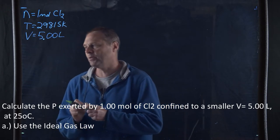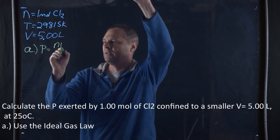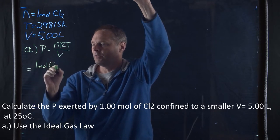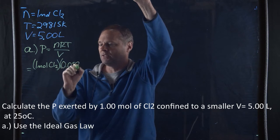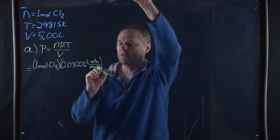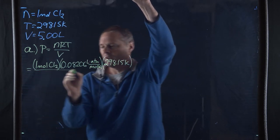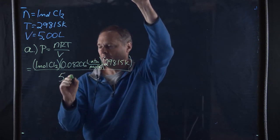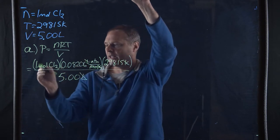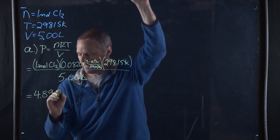For part A, we're going to use the ideal gas law to find the pressure. Pressure is equal to nRT all over V, which is equal to one mole times R (0.08206 liter·atmosphere/mol·K) times 298.15 Kelvin divided by 5.00 liters. The liters, Kelvins, and moles all cancel, leaving units of atmospheres. And for that, I got 4.89 atmospheres.